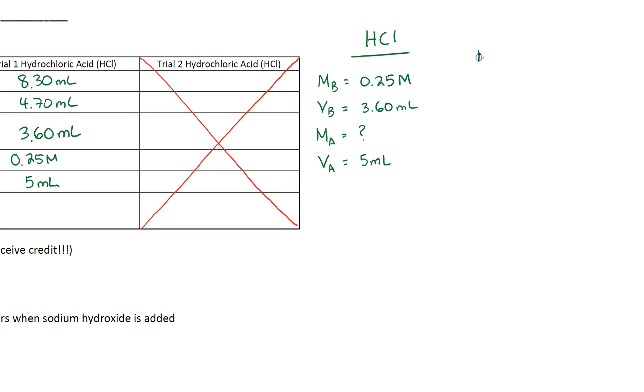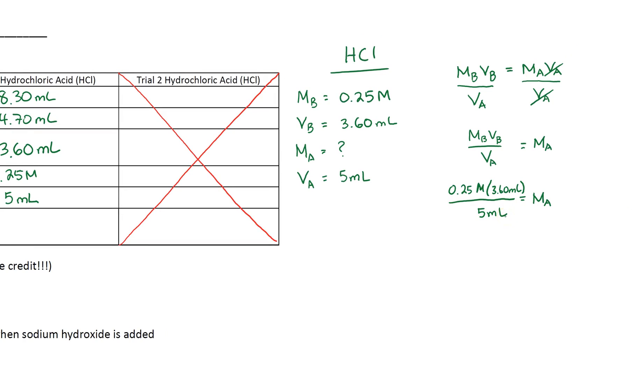So the next step is to write out my equation MB*VB equals MA*VA. I need to isolate the variable I'm looking for. The variable I'm looking for is MA, so I need to divide both sides by VA. VA cancels out and I'm left with MA equals MB*VB divided by VA. Since I have my variable isolated, I'm just going to be substituting my value next. So that's MB, that's VB, VA.